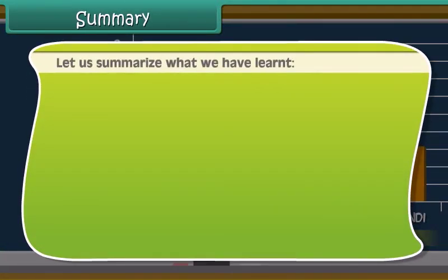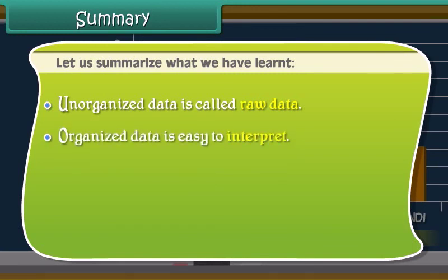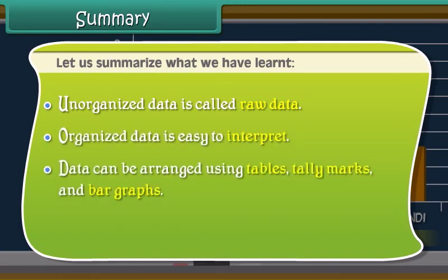Let us summarize what we have learned. Unorganized data is called raw data. Organized data is easy to interpret. Data can be arranged using tables, tally marks and bar graphs.